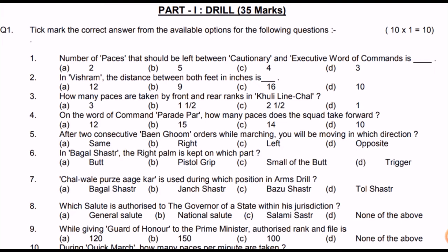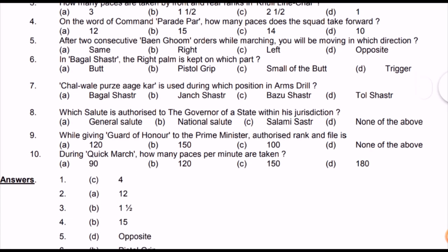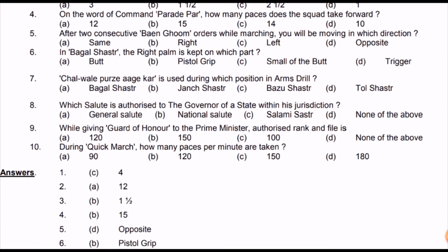Question three: how many paces are taken by front and rear ranks in Khali line chal? The answer is one and a half steps. Question four: on word of command 'Parade Par,' how many steps are taken? Parade Par is also known as Samiksha Karnan. We take 14 steps and then 1-2, meaning one step more — total 15 steps. Option B is the correct answer.